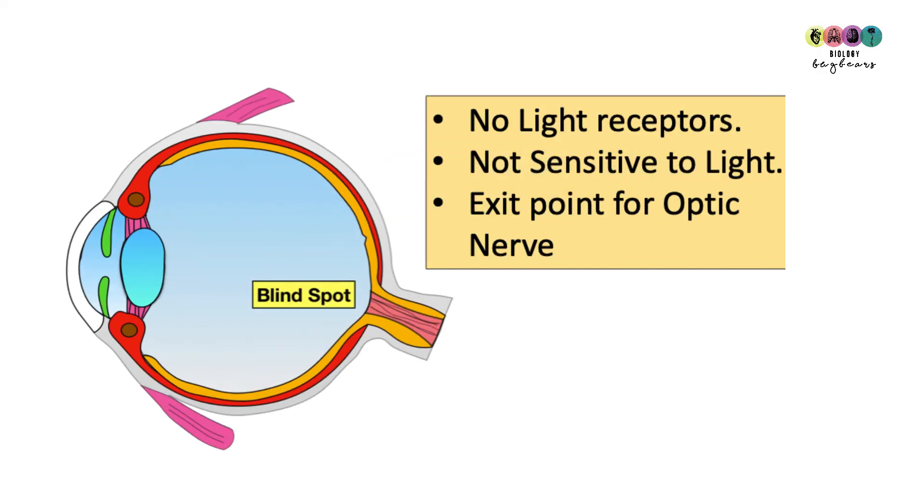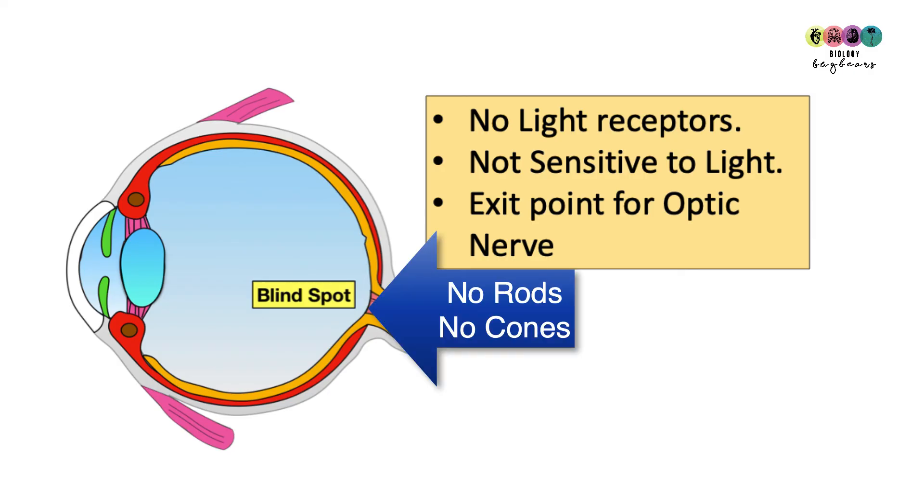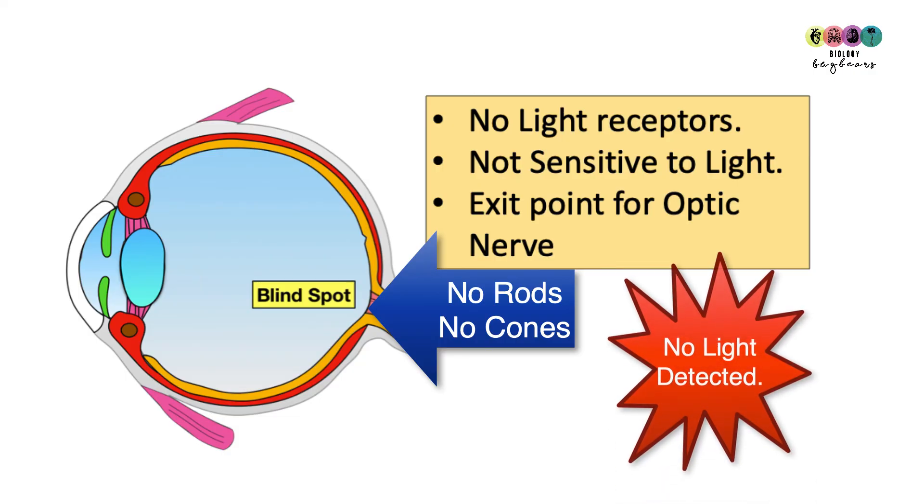The blind spot is where the optic nerve leaves the eye. There are no light receptor cells here, so no rods and no cones, so any light that falls in the blind spot does not get detected.